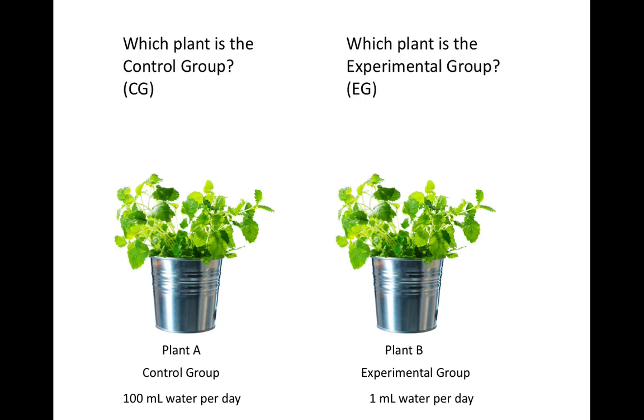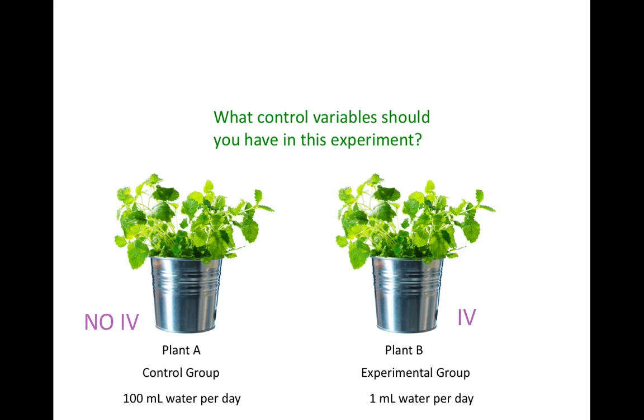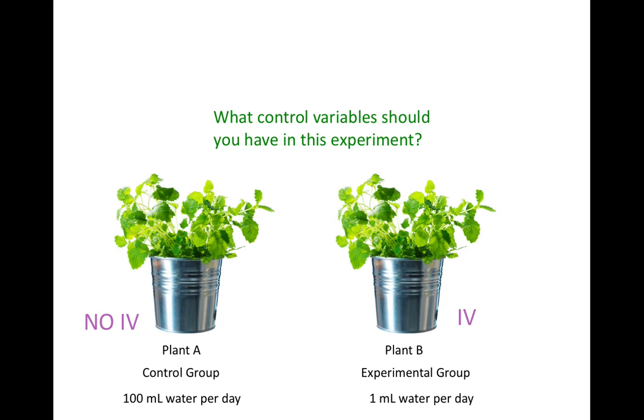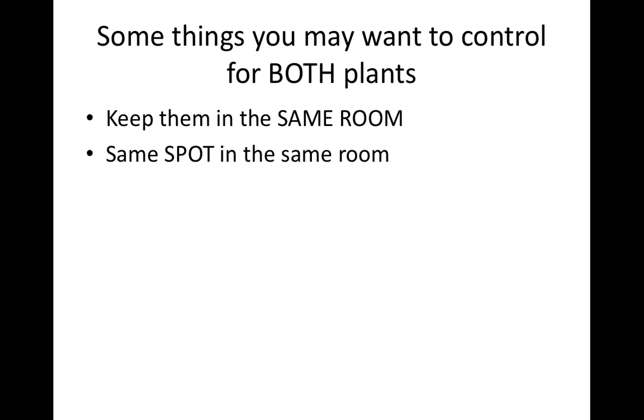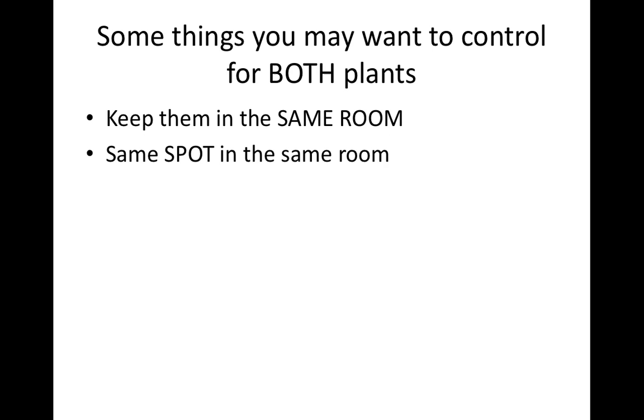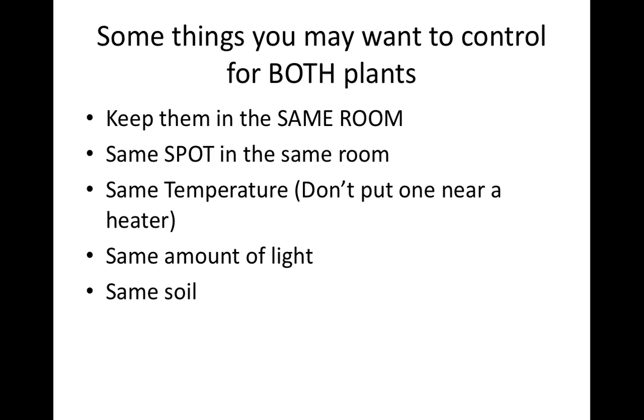Which group has the independent variable? Plant B. What control variables should you have for both of these plants? Some things you may want to control for both plants is to keep them in the same room, same spot in the same room, the same temperature, the same amount of light, and the same soil.